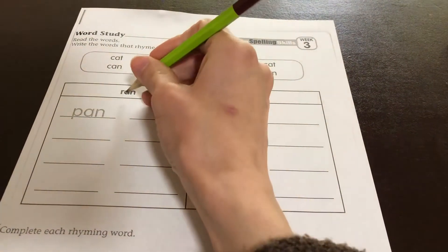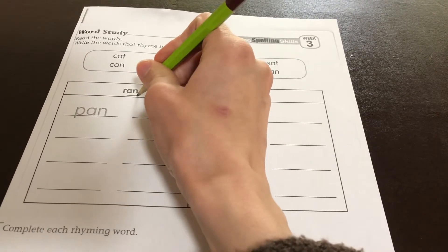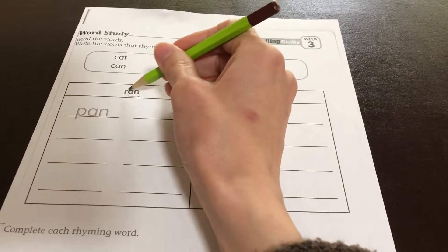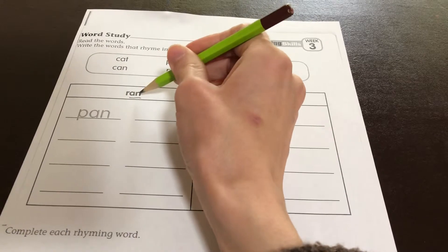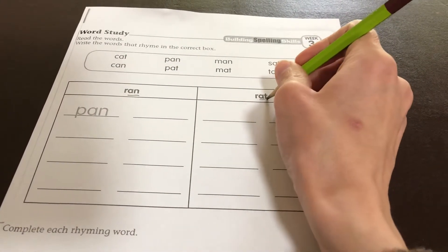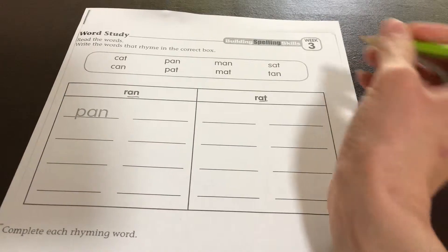And the way rhyming words work is generally the last letters. So this is ran, so we want anything that has an 'an' in it. And we have rat, so we want sounds that have an 'at' in it.